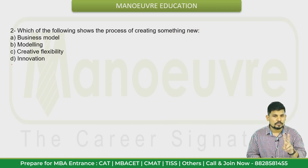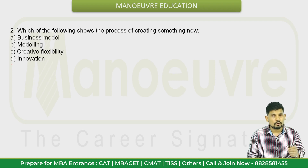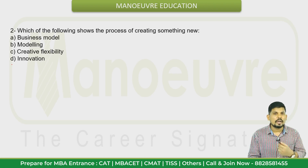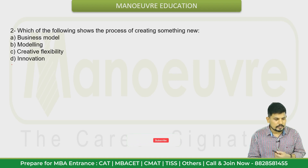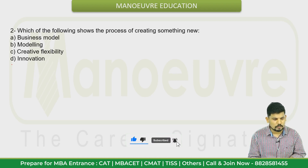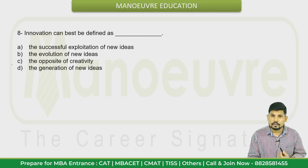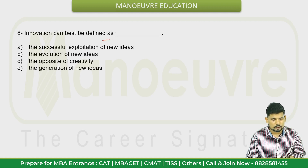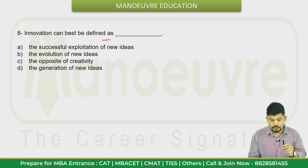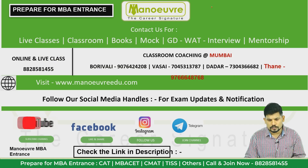Here are two questions — give your answers in the comments. First: which of the following shows the process of creating something new? Options: business modeling, creative flexibility, or innovation. Second: innovation can best be defined as what? The right answers are in the PDF — download it from the link in the description and check your answer. I want to see how many people send the correct answer.